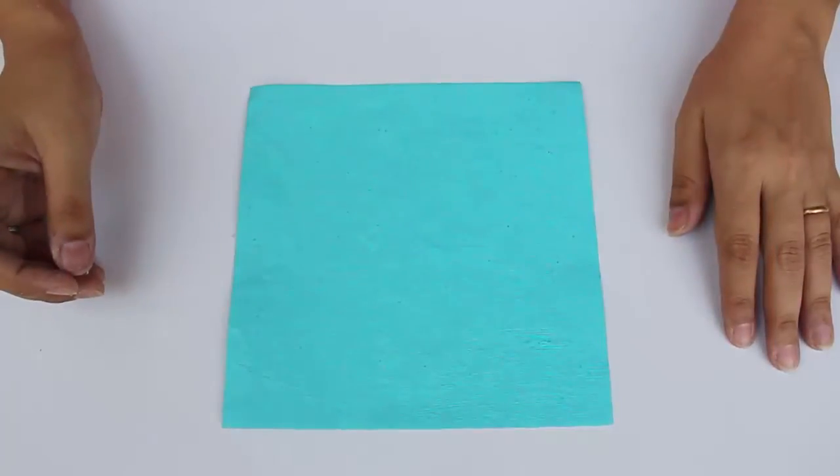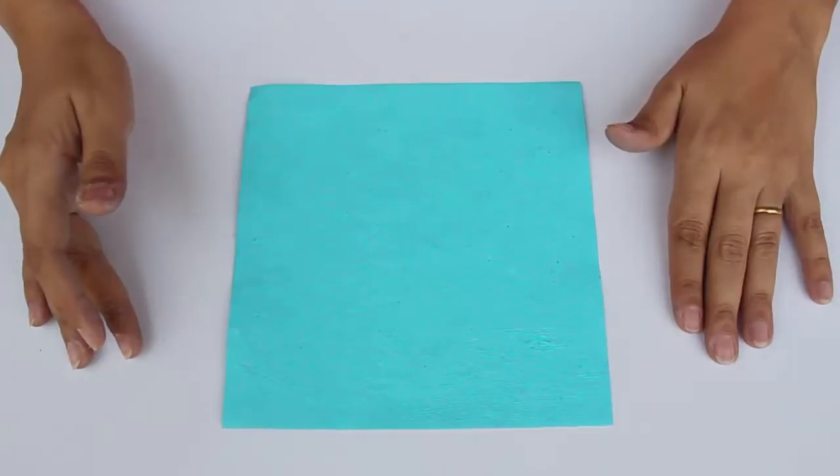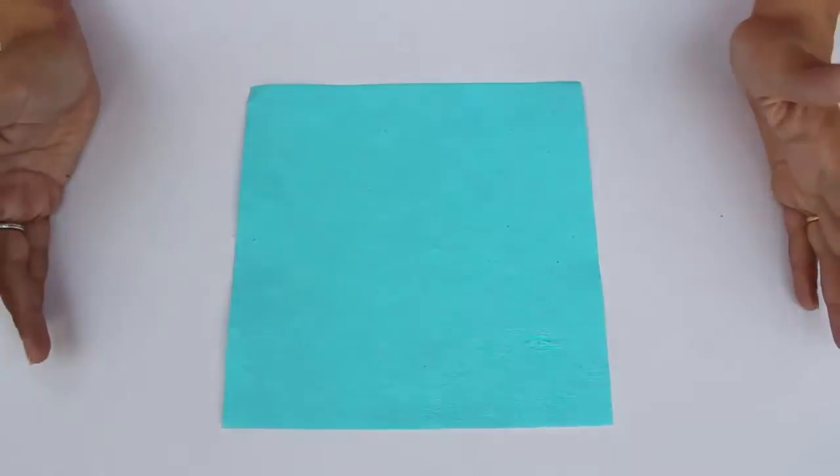To make the cat, we start with a square piece of paper. Take 6 inches or more. A regular print paper would also work.